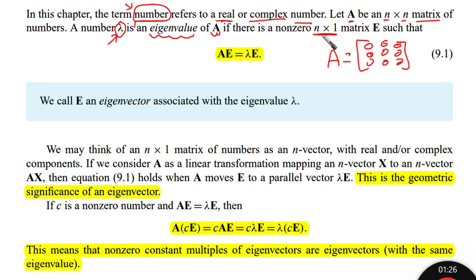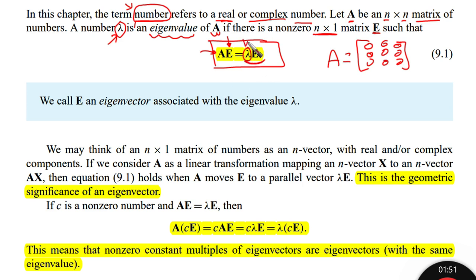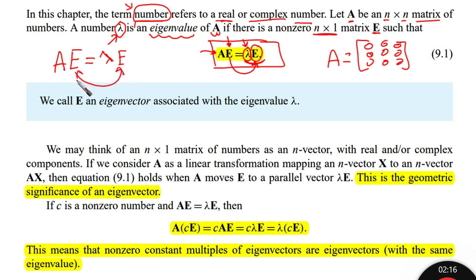That condition tells us that the matrix A multiplied by the vector e equals some number lambda multiplied by that same vector e. So matrix A times a vector gives us lambda times the same vector — that's what eigenvalues and eigenvectors are all about.